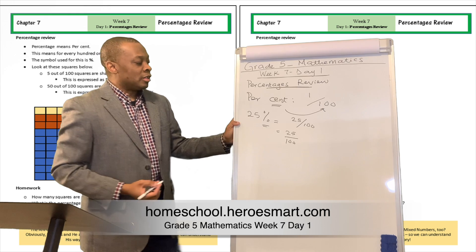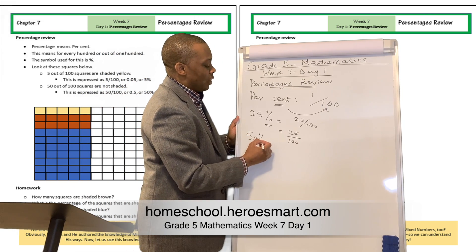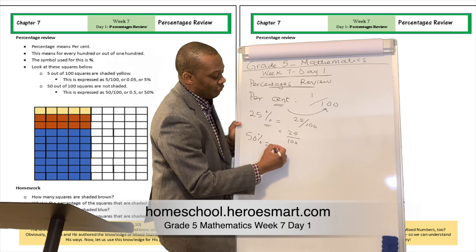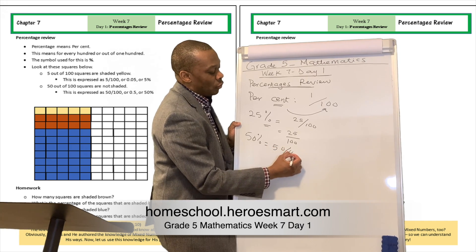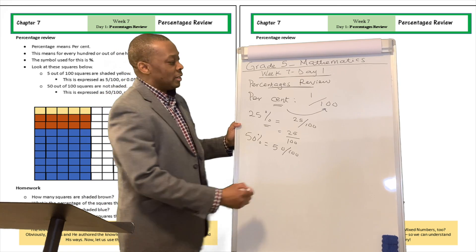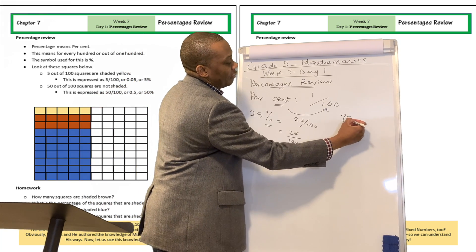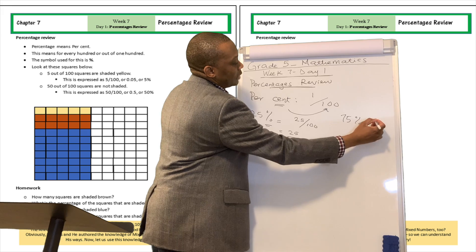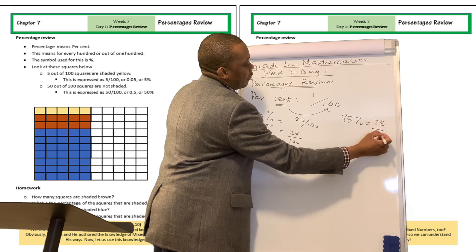If I talk about 50%, well, what that means is 50 out of 100. If I talk about 75%, 75%, well, that's going to be 75 out of 100.